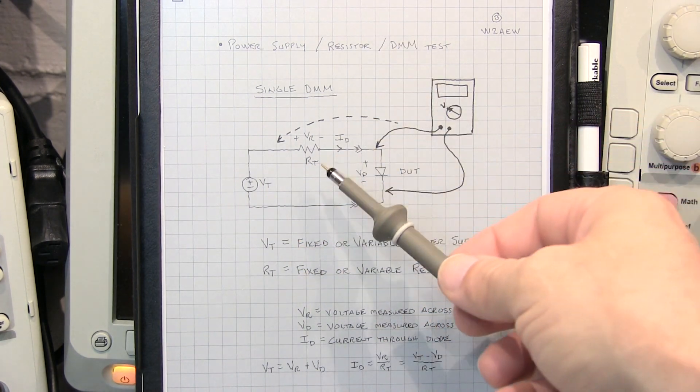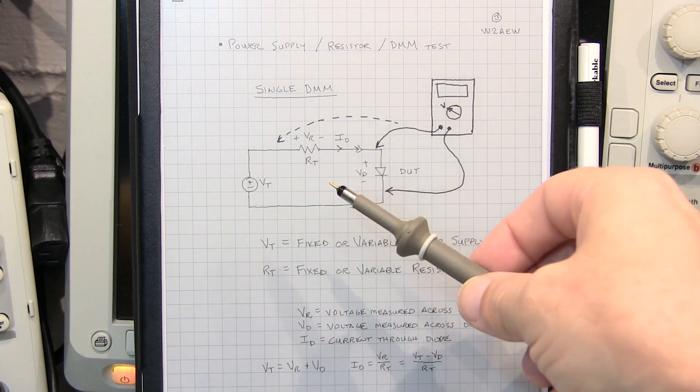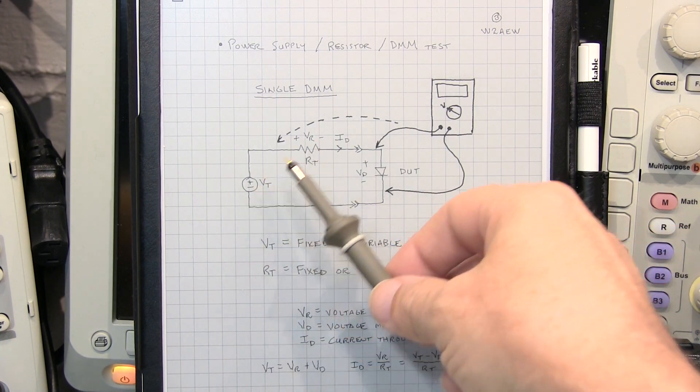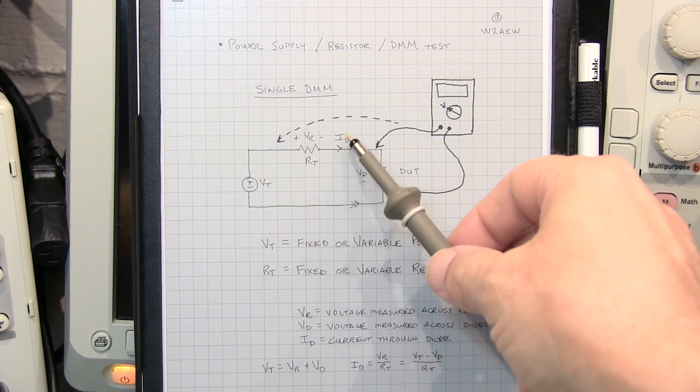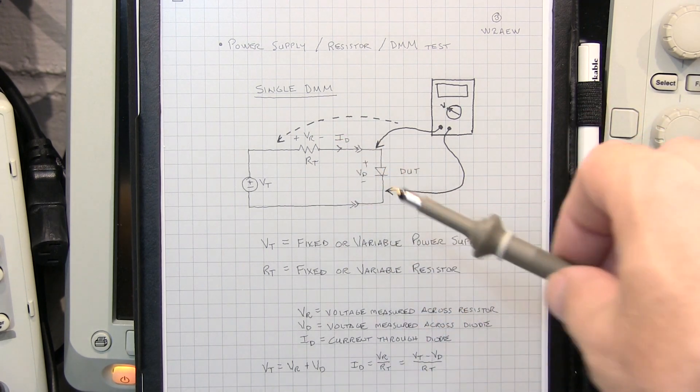The resistor can either be a fixed resistor, or even a variable resistor, or even a decade box. But at the end of the day you just want to be able to adjust those two parameters, one or the other, to result in the test current that you want to send through the diode to test it.